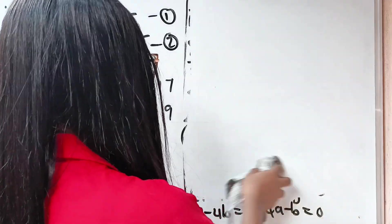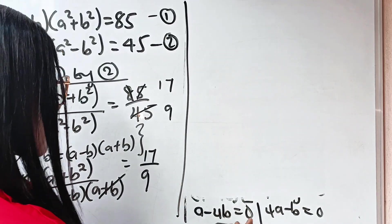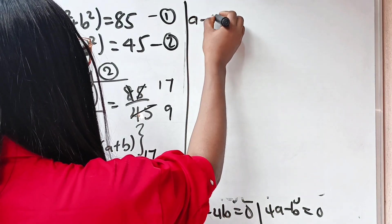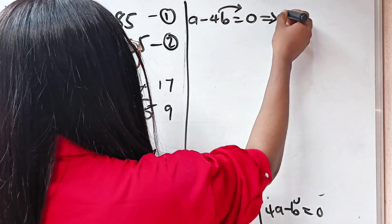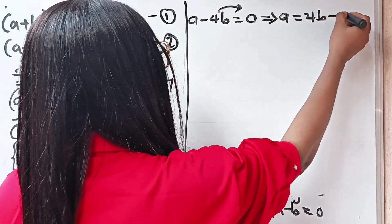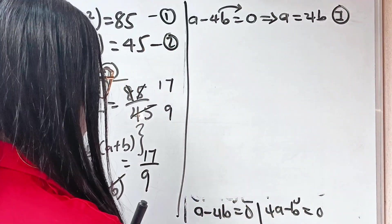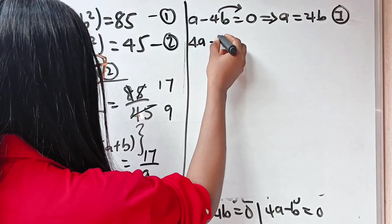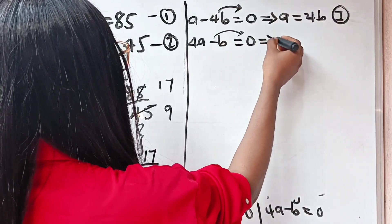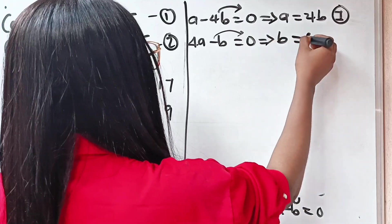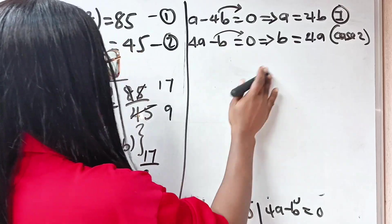We have two cases. The first case: a minus 4b equals zero, which implies that a is equal to 4b — let's call this case one. The second case: 4a minus b equals zero, which implies that b is equal to 4a — and this is case two. Let's start with the first case.